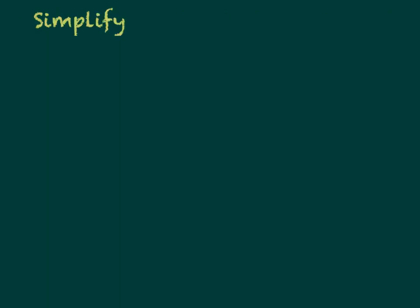You guys already know what square roots are — they are the root of a number, what you would multiply by itself to get that number. Let's simplify the square root of 16. You would tell me 4. It's not plus or minus 4 because I said the implied positive square root of 16. So your answer is positive 4.